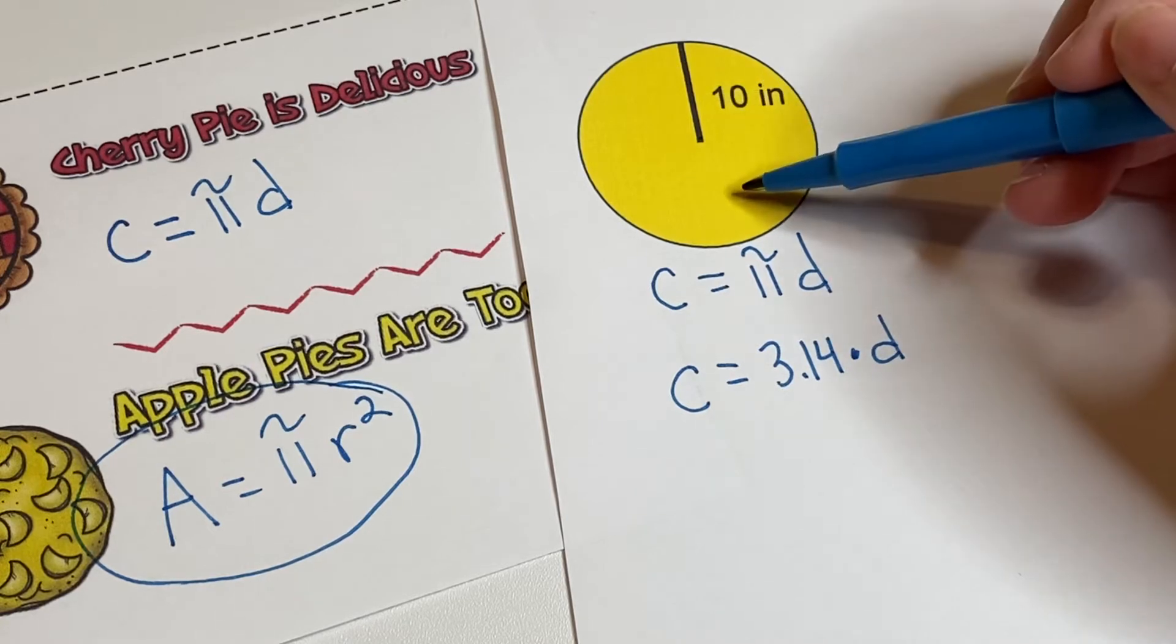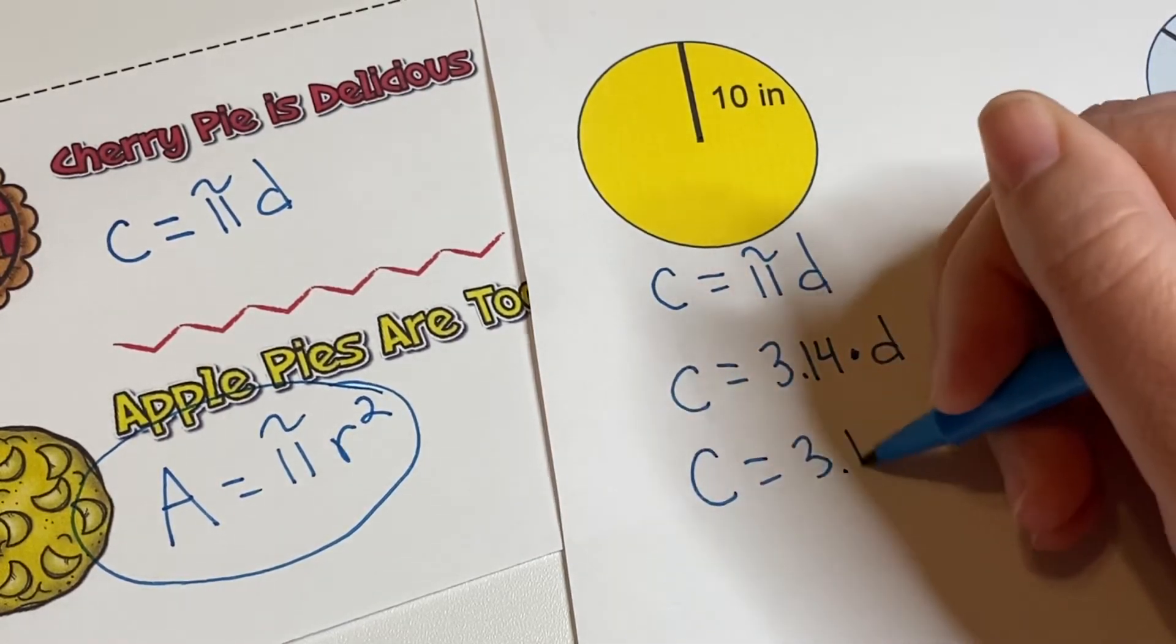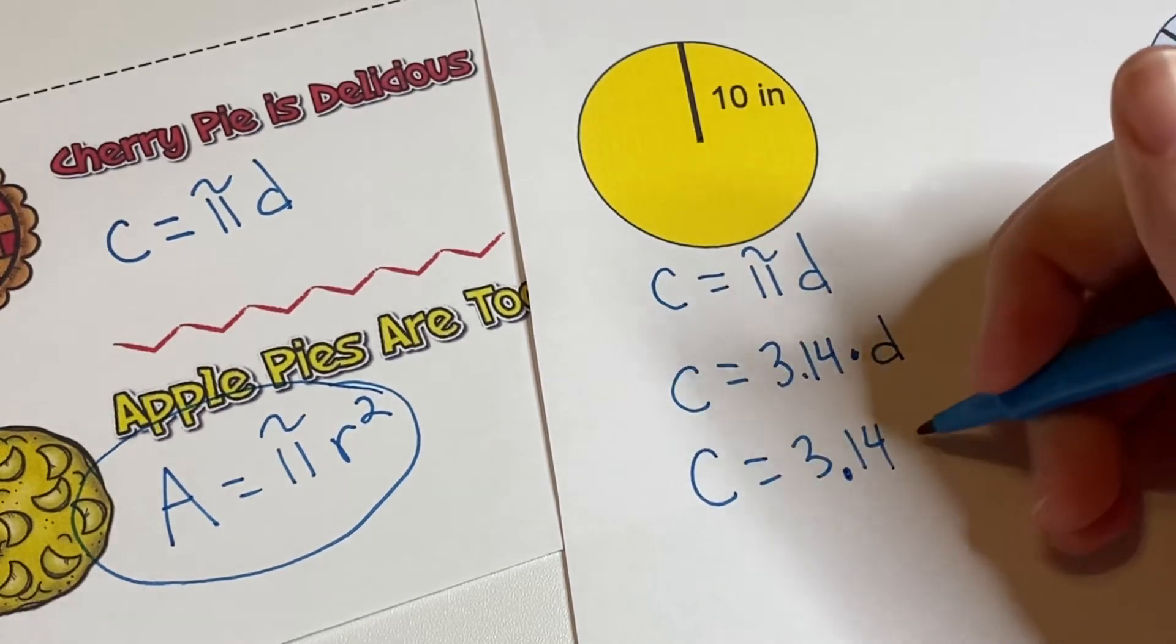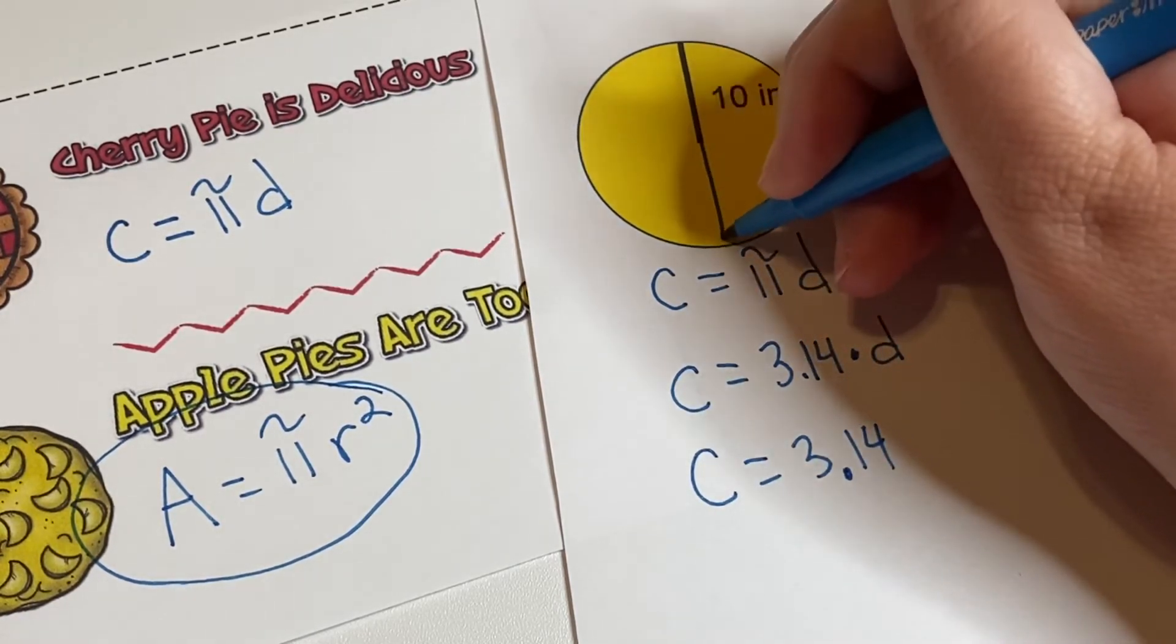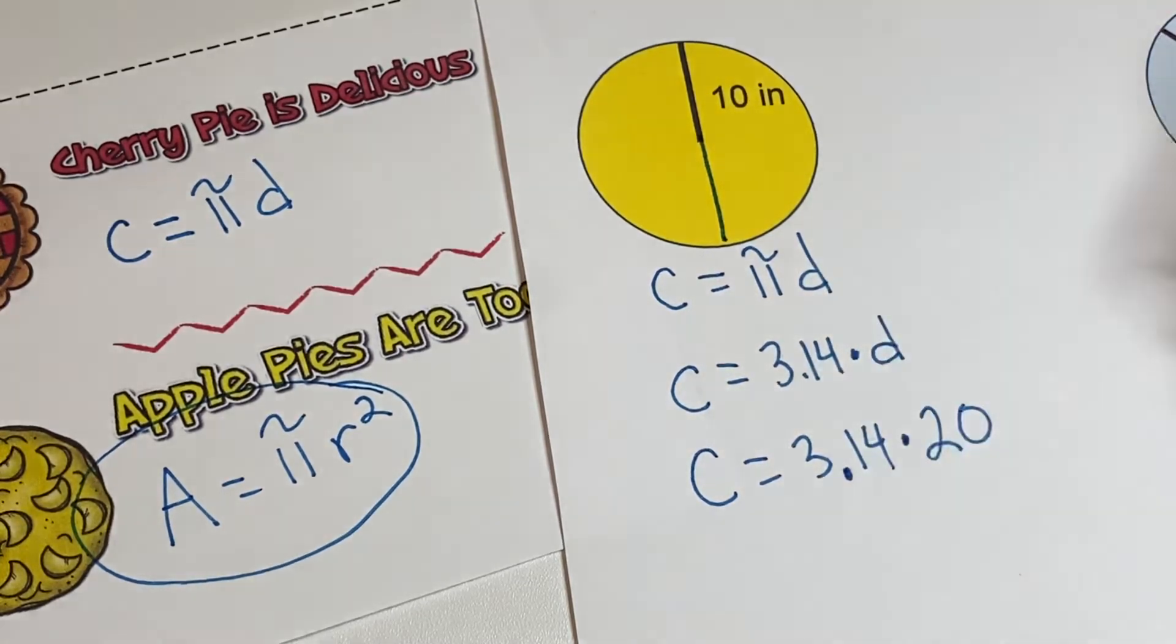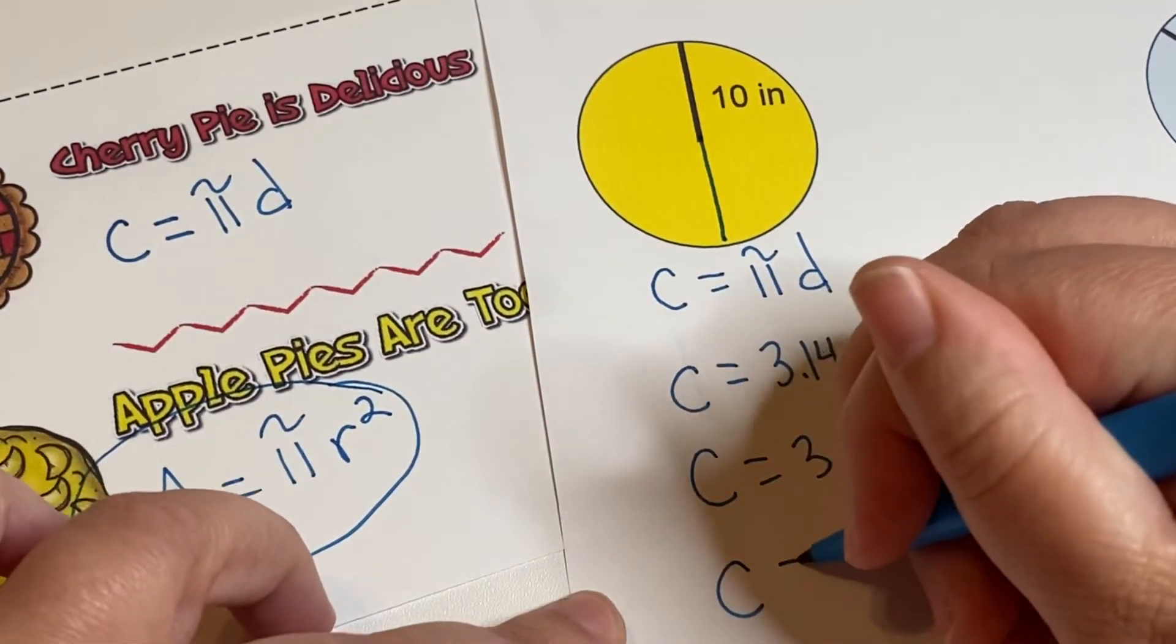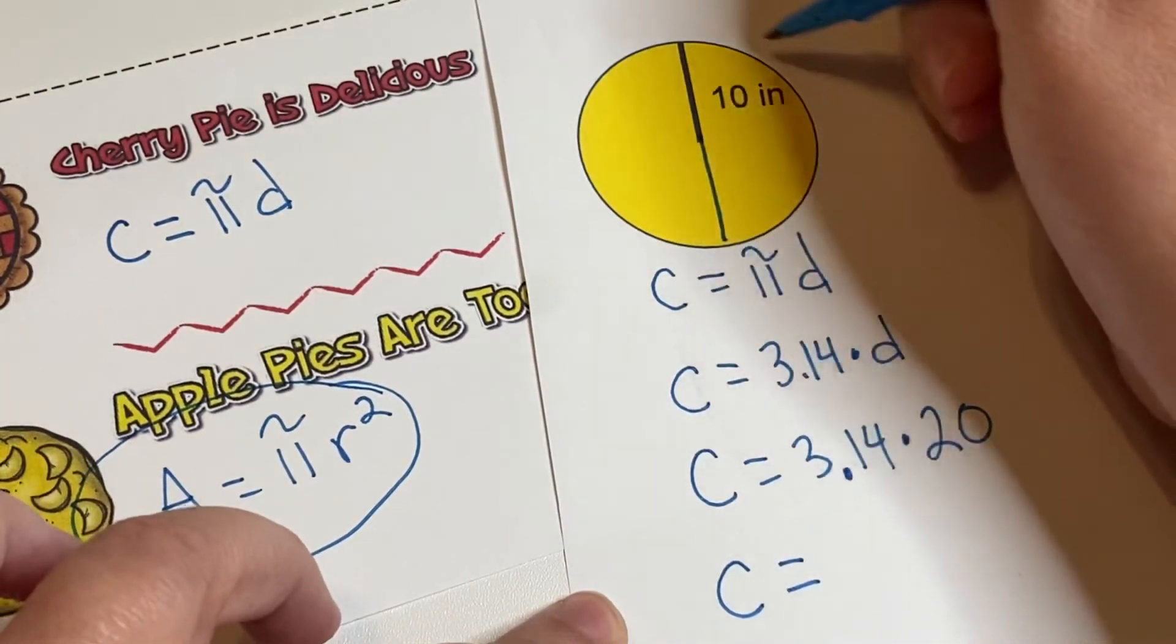You're right because you're doubling it. So 10 times 2 is 20. So c is equal to 3.14 times all the way across, the diameter, which is 20. We type that into our calculator.